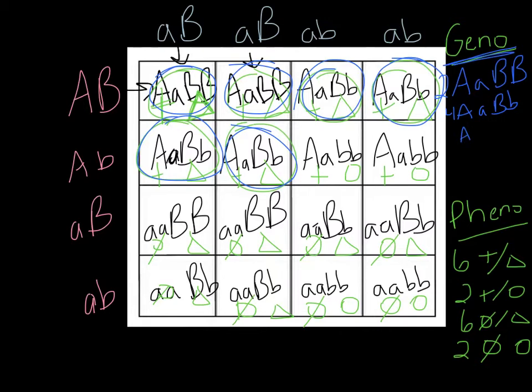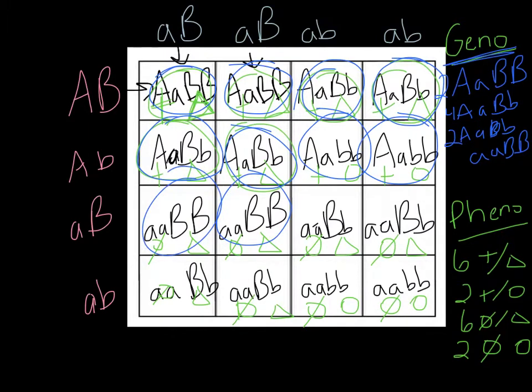Next one, big A, little a, big B, little b - and there's one, two of those. Little a, little a, big B, big B - one, two of those. Little a, little a, big B, little b - one, two, three, four.